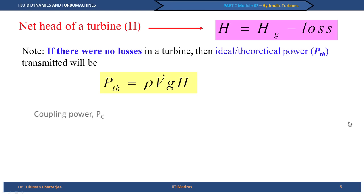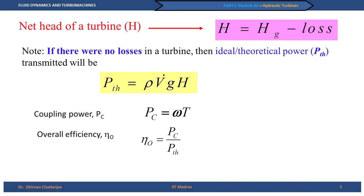Accounting for these different losses, what we ultimately get from the turbine is the coupling power P_C, given by ω times T (rotational speed times torque). The ratio of P_C to the theoretical power is called the overall efficiency. The key concept to keep in mind is the ideal power, the actual power, and the efficiency.